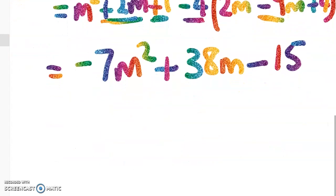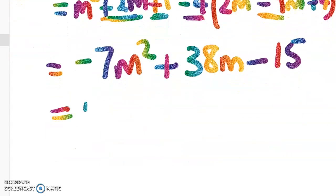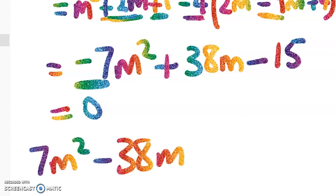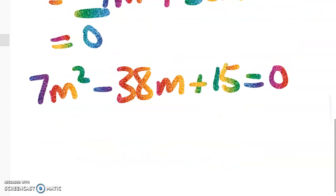We know that has to equal 0. I hate working with a negative leading coefficient, so I'll multiply through to get 7m squared minus 38m plus 15 equals 0.